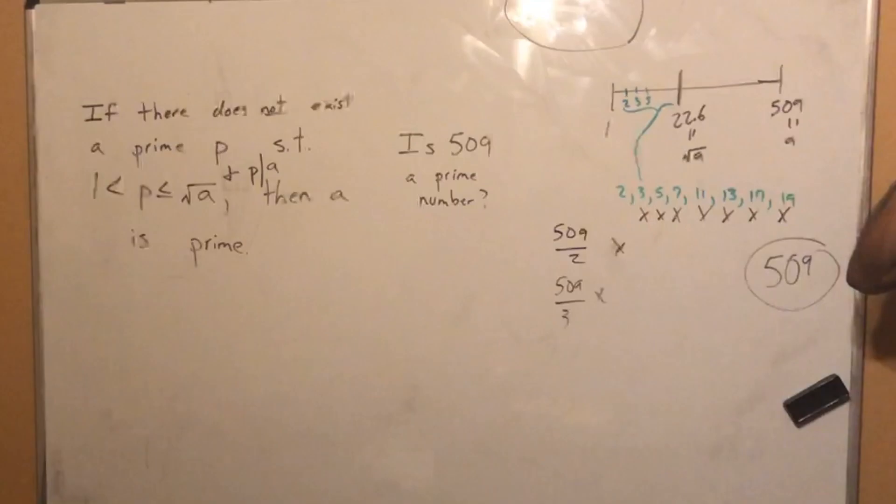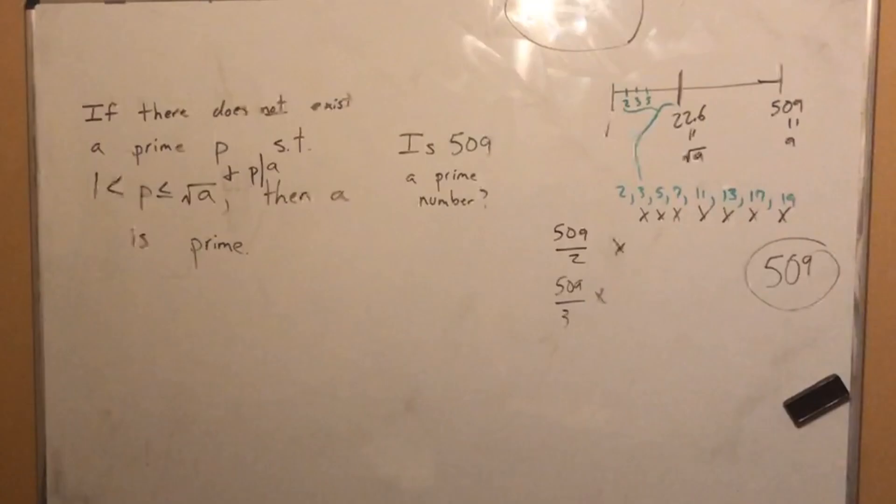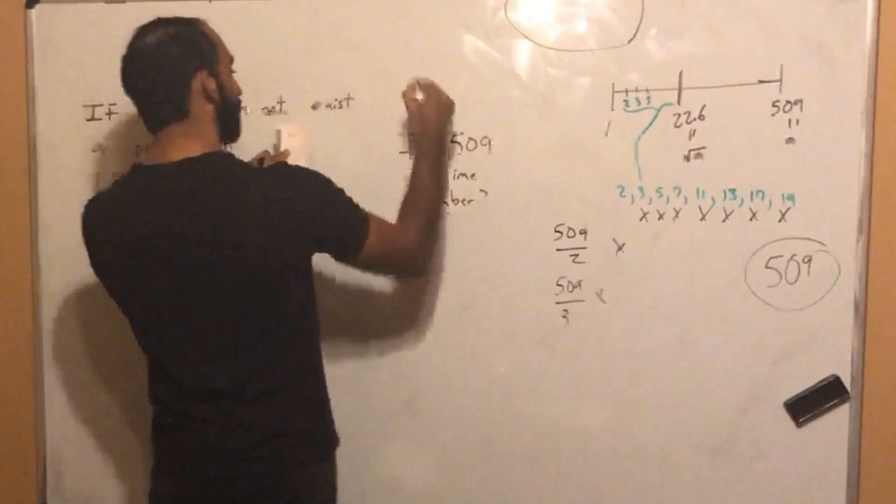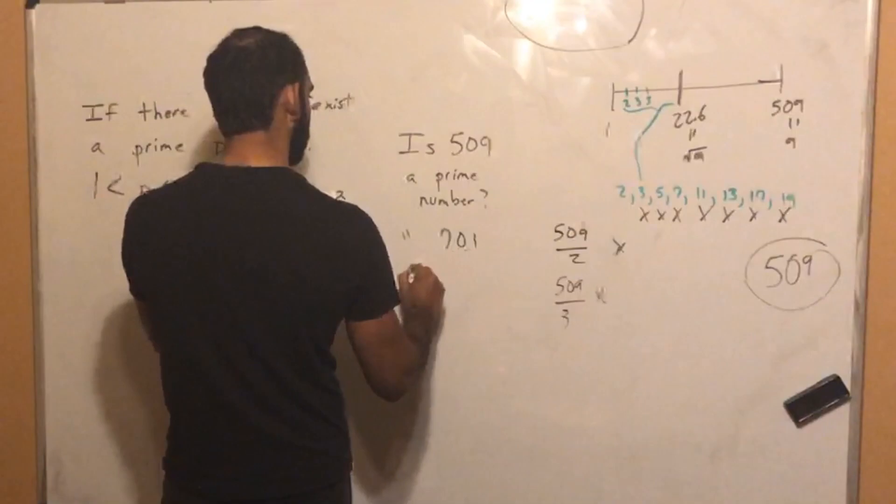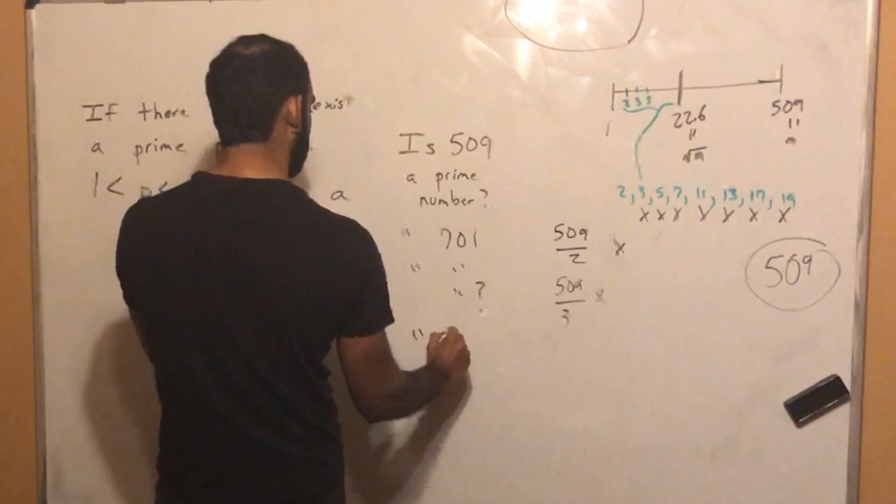Notice there are so many more numbers between 22.6 and 509 than there are between 1 and 22.6. So this is a really useful way to test for primality. I want you guys to try these examples. I want you to answer the same question, but is 701 a prime number? And also do it for 1,009.